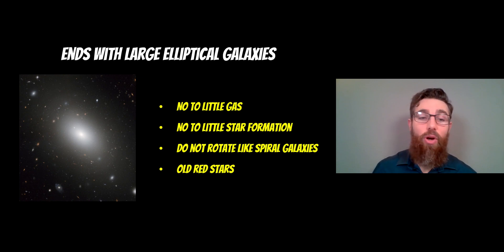There's also little to no star formation occurring because there's no gas there to form the stars. And they're not rotating like spiral galaxies. They're more spherical. The motion is a bit more random, the way the stars move internally. And they are populated by old red stars, so the whole galaxy as a whole would appear redder.